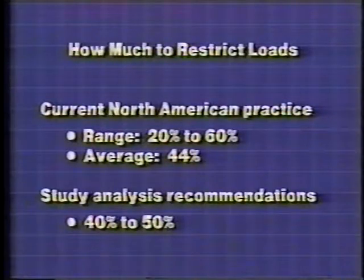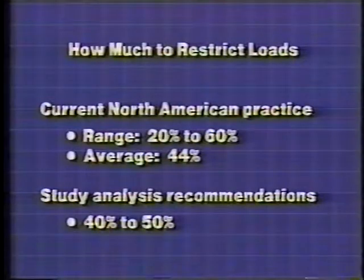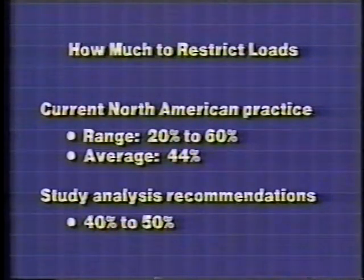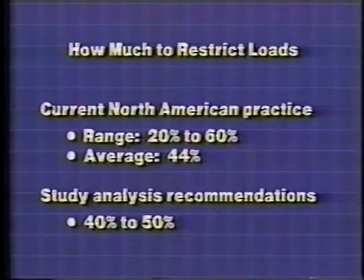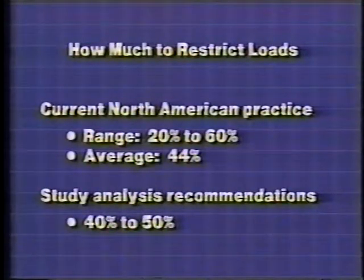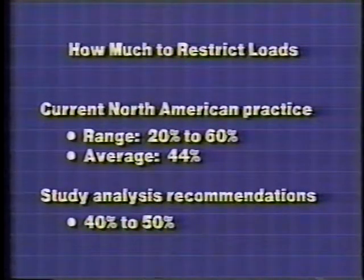The load reductions used by the agencies surveyed ranged from about 20 to 60 percent. The average load reduction for seven multi-state areas was approximately 44 percent. This suggests that reducing the load on individual axles by about 40 to 50 percent reduces the associated pavement stress to levels that preclude or reduce pavement damage. A minimum load reduction of 20 percent seems to be necessary, while load reductions greater than 60 percent appear to be excessive.